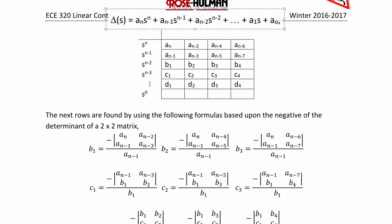The remainder of the rows are found using determinant-like formulas. B1 equals negative (a_n * a_(n-3) minus a_(n-1) * a_(n-2)) divided by a_(n-1). B2 equals negative (a_n * a_(n-5) minus a_(n-1) * a_(n-4)) divided by a_(n-1). B3 equals negative (a_n * a_(n-7) minus a_(n-1) * a_(n-6)) divided by a_(n-1).